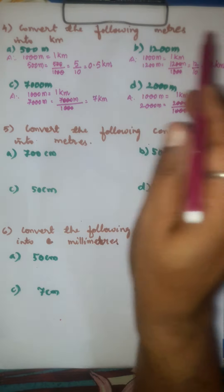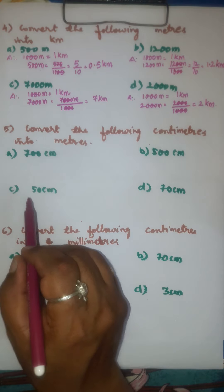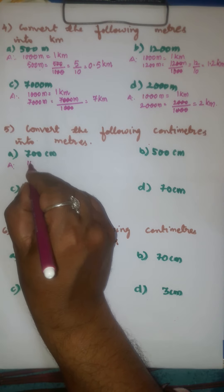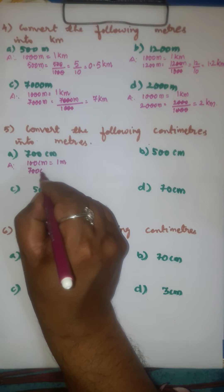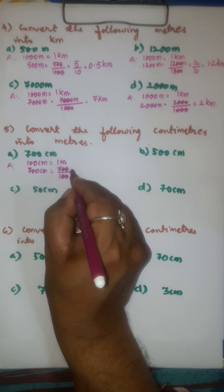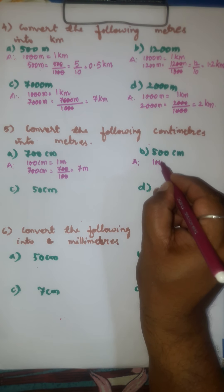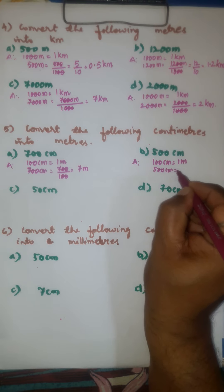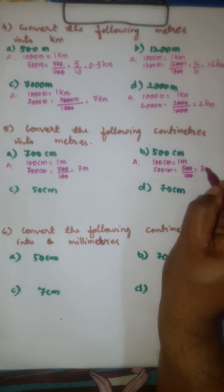Now, in the fifth section, we have to convert centimeters to meters. We know that 100 centimeters is equal to 1 meter. Therefore, 700 centimeters divided by 100 — after cancellation — gives 7 meters. For 500 centimeters divided by 100 — after cancellation — the answer is 5 meters.